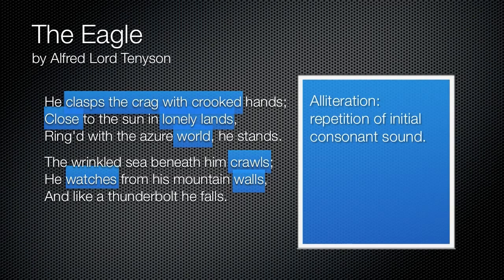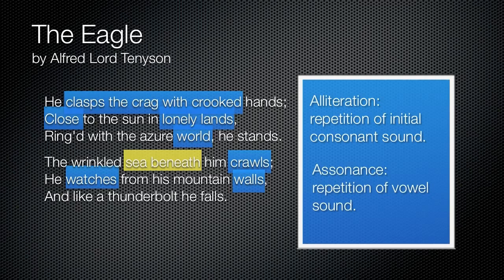Another thing you can use to your advantage is what's called assonance — when there's a repetition of a vowel sound. In this case, we see it in the first line of the second stanza: "sea beneath" — that E sound ties these words together. Poetry, again, I can't stress this enough, is much more than just making words rhyme. It's using sounds to convey meaning and tie thoughts together.